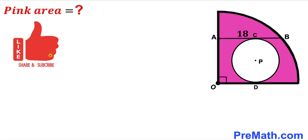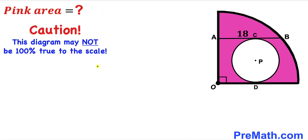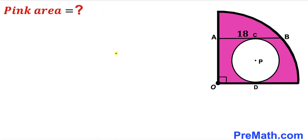Please don't forget to give a thumbs up and subscribe, and keep in mind that this figure may not be 100% true to scale. Let's get started. We are dealing with the smaller white circle and this quarter circle. I'll label the radius of the quarter circle as uppercase R and the radius of the smaller white circle as lowercase r.